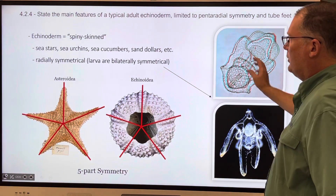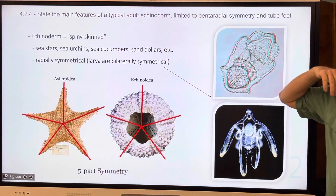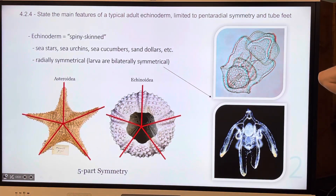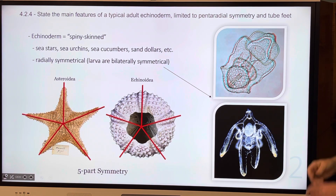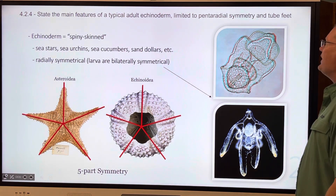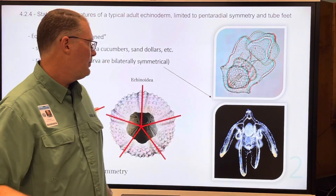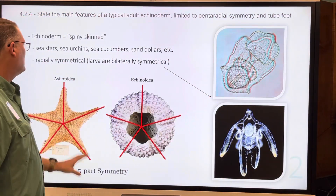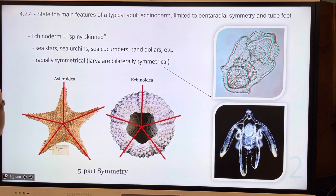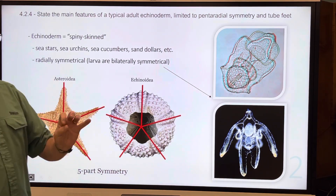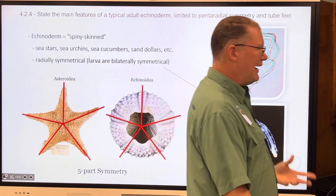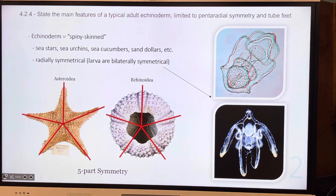One of our topics is we have to state the main features from Unit 4 of the typical echinoderm, limited to pentaradial symmetry and tube feet. Penta means five — radial symmetry. Echinoderm means spiny-skinned. The Echinodermata are spiny-skinned organisms. That's how they are classified.